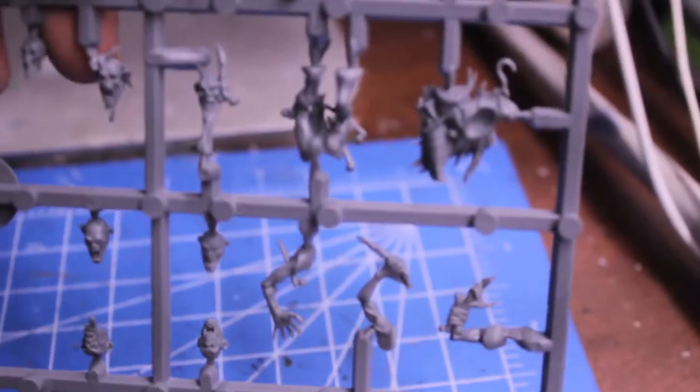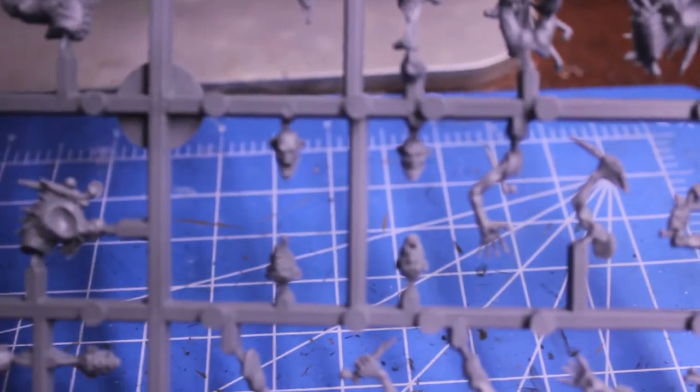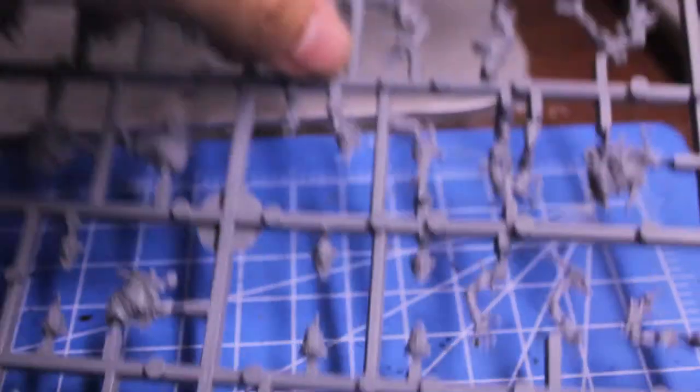So you've got some great heads. Let's take a look at it from this side to look at the heads first. I did notice that you get more heads than you need on the sprue. You get something like 16 or 17, I don't remember exactly, and you only get 10 Ghoul bodies.